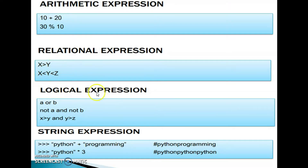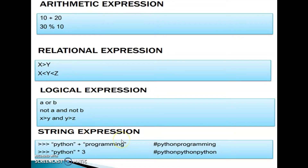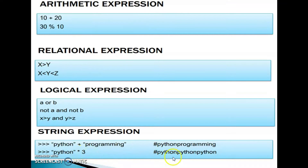Logical expressions include A or B, not A and not B, or x greater than y and y greater than z. String expressions use concatenation and repetition, for example Python plus programming gives Python programming, and Python star 3 gives Python, Python, Python. These are all types of expressions.